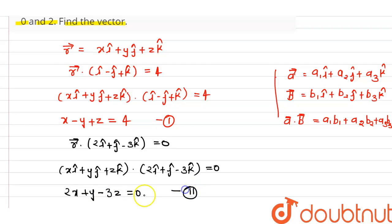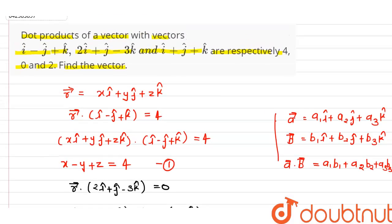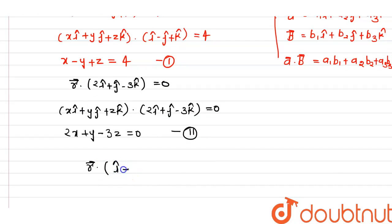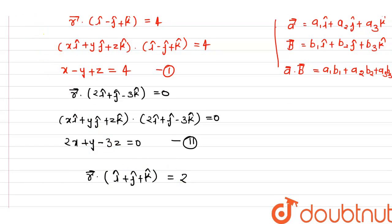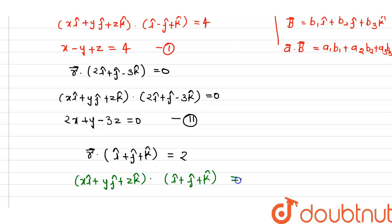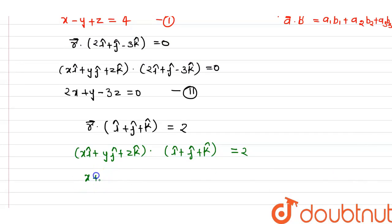We are also given that the dot product of vector r with (i cap plus j cap plus k cap) equals 2. Substituting the value of vector r, that is (x i cap plus y j cap plus z k cap) dot (i cap plus j cap plus k cap) equals 2. Using the dot product concept, this gives us x plus y plus z equals 2. This is equation 3.